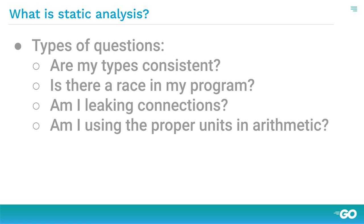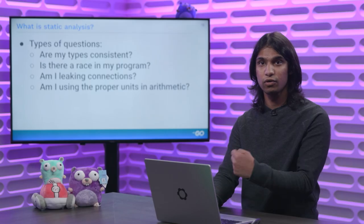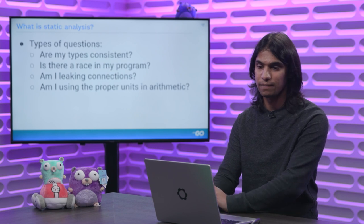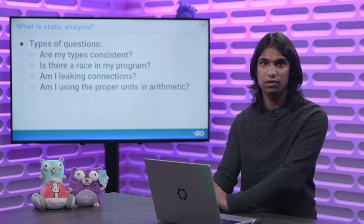Is there a data race in my program? This is something that's pretty hard to verify statically unless you introduce a ton of annotations. But if you use something like the Go race detector, which will introduce instrumentation so that when you run your program it'll catch these issues at runtime, you'll be able to find these errors a lot of the time.